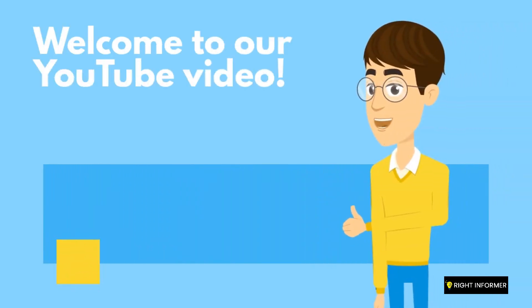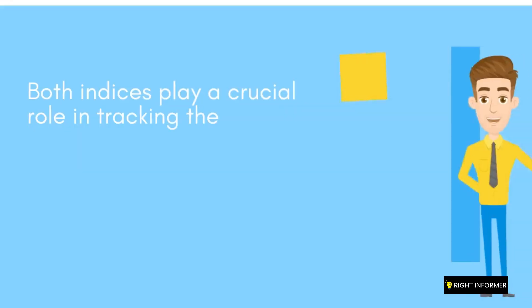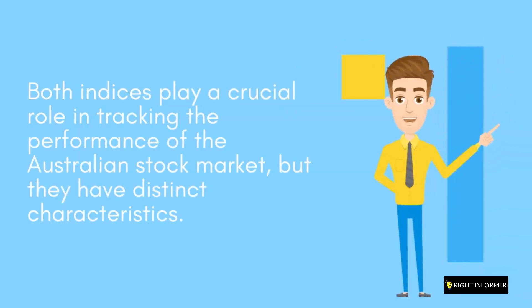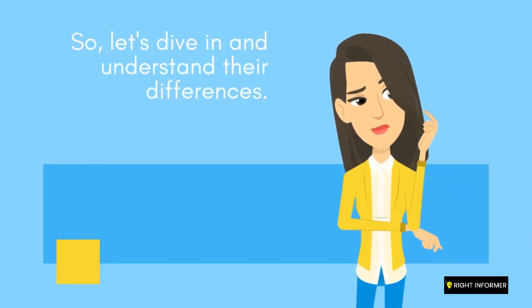Welcome to our YouTube video. In today's episode, we will explore the difference between two prominent stock market indices in Australia, the S&P/ASX 200 and the All Ordinaries Index. Both indices play a crucial role in tracking the performance of the Australian stock market, but they have distinct characteristics. So, let's dive in and understand their differences.